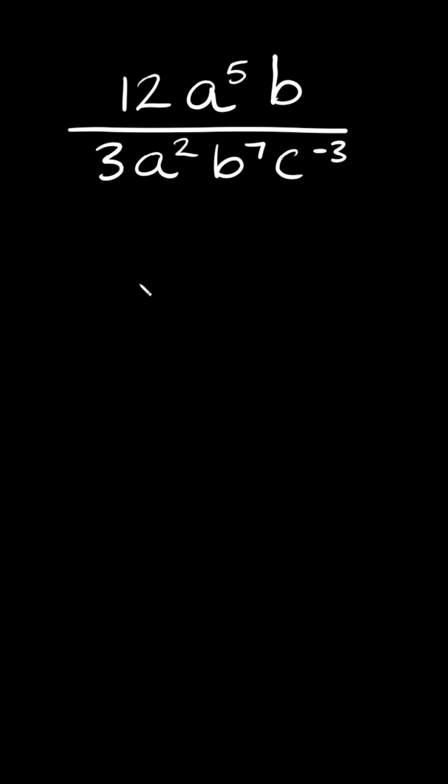What's up you freaking geniuses? So in order to divide monomials you first want to divide the coefficients and then the variables.